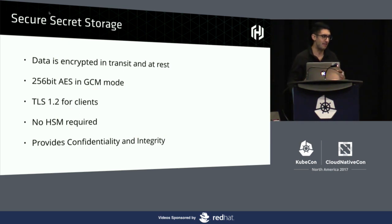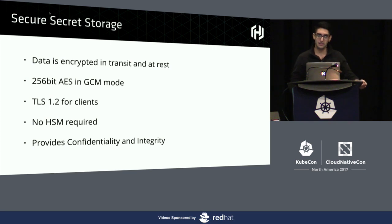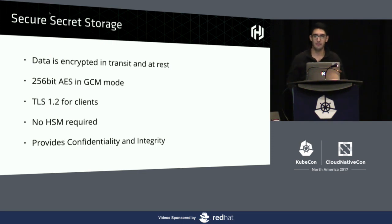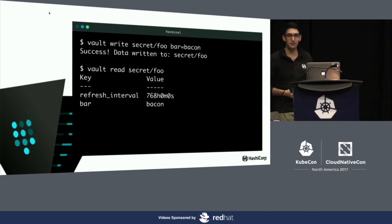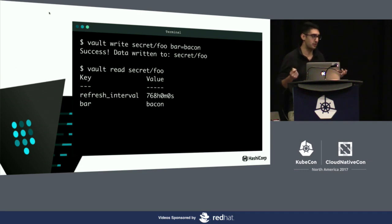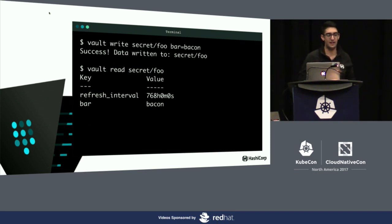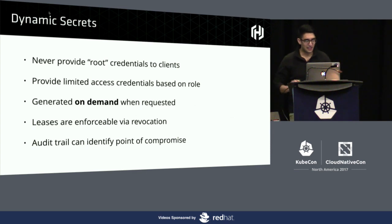The table stakes of the system is just secure bit storage — you want to be able to write something and pull it back out. For all that we've mentioned, writing a secret and reading it back looks like this: we write some arbitrary value, bars equal to bacon, at path secret/foo. The system is architected roughly like a hierarchical file system. And as we read it back, we get our arbitrary value back. Simple — table stakes.